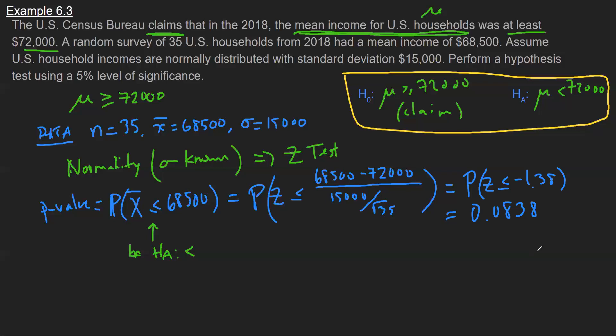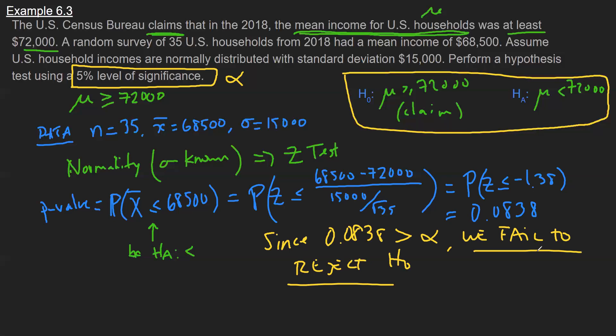So the significance level right here in this yellow box is the symbol alpha. And so the rule is since our p-value 0.0838 is larger than our alpha, we fail to reject the null. And that's the decision we're going with.